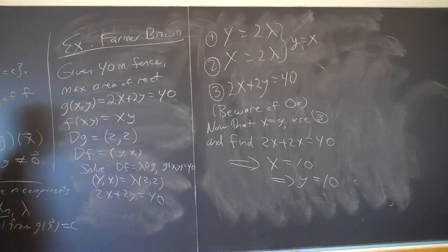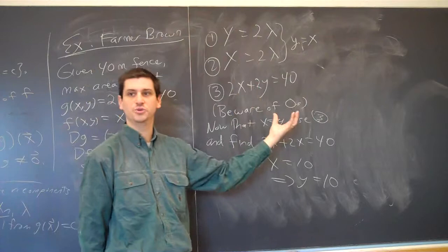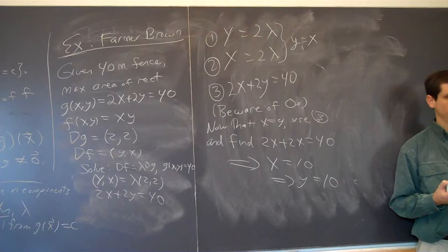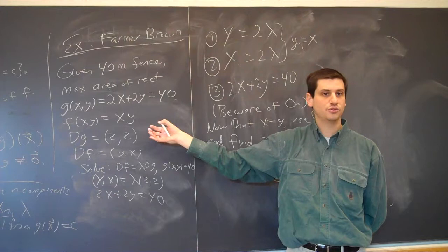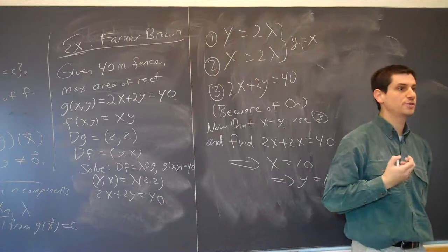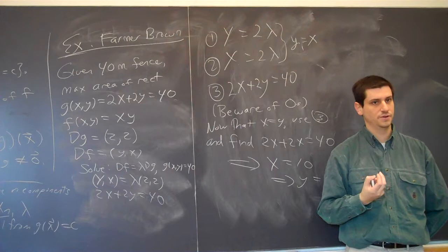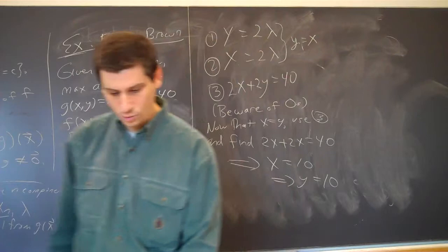So the procedure is: write your constraint, write the function to maximize or minimize, calculate the gradients, set them equal with the lambda factor, and don't forget the constraint equation must also be satisfied. This is probably the easiest example — the algebra is very straightforward.